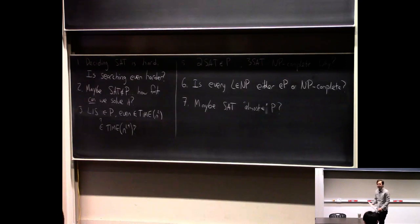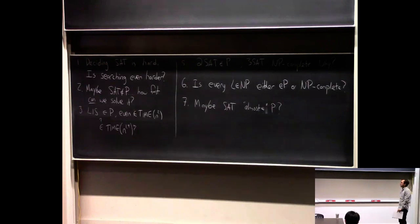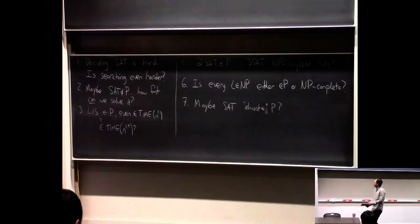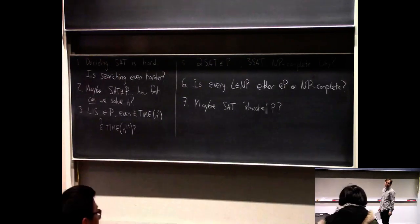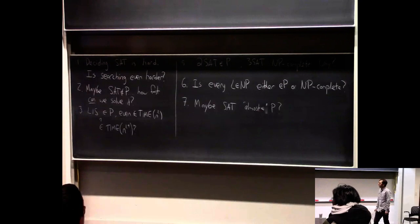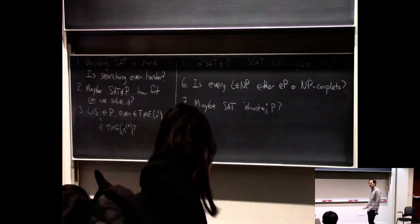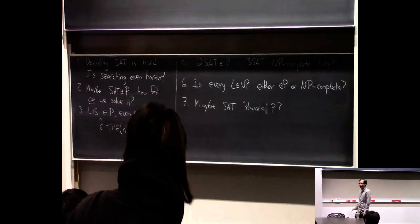What are we going to do in the future? One set of things: we've been studying only time complexity so far, just trying to find the fastest algorithm for problems. There are other measures of complexity, other resources, like space — how much memory an algorithm uses — randomness, interaction. So complexity measures that are not time.